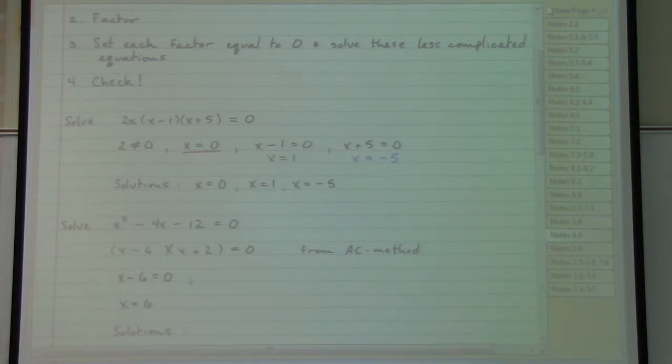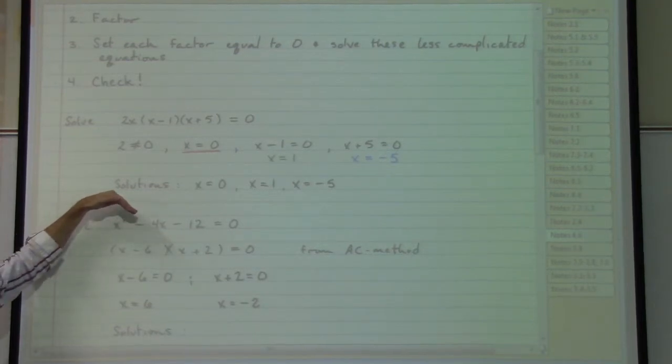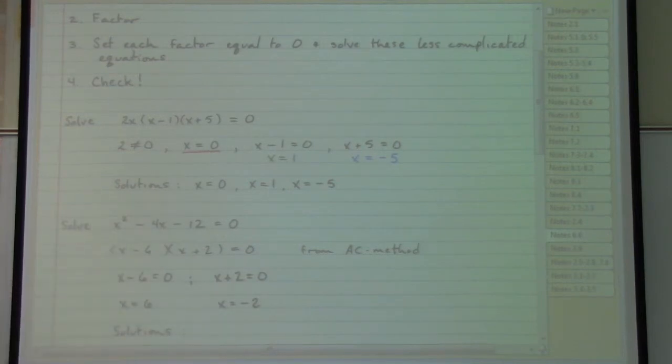And x plus two equals zero gives us x equals negative two. If we take the time and trouble to check these by going back to our original equation, if we plug in a six for x, six squared minus four times six minus 12, 36 minus 24 minus 12 will equal zero. So x equals six does in fact work.